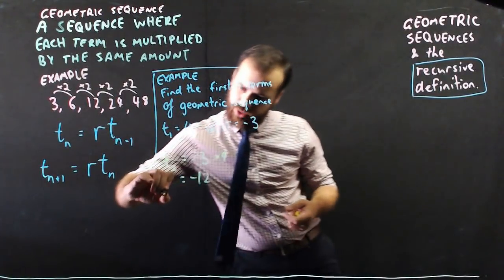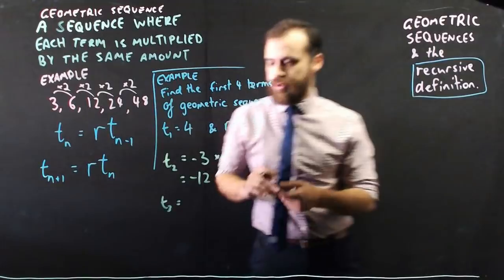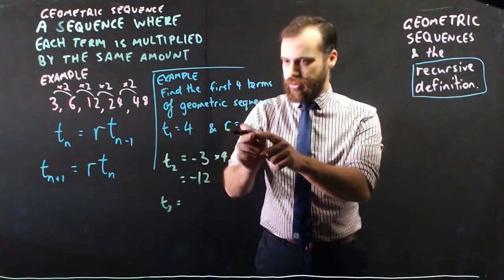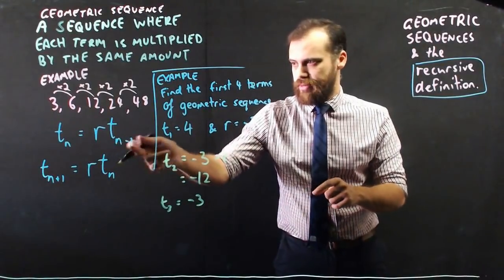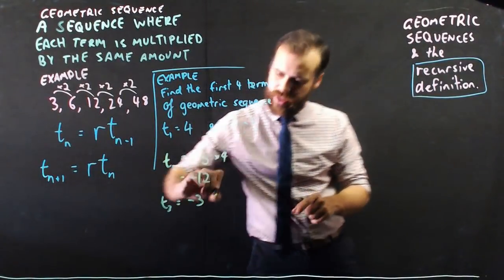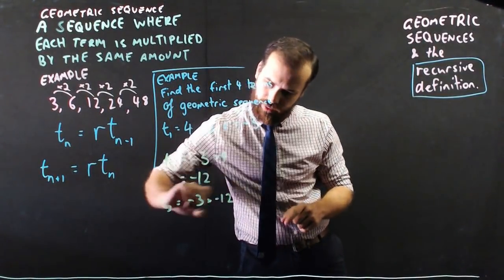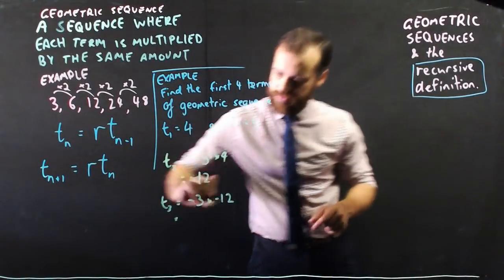Alright, so there's term 2. Term 3 is going to be equal to the common ratio times the previous term n minus 1 which in this case is negative 12, and negative 3 times negative 12 is positive 36.